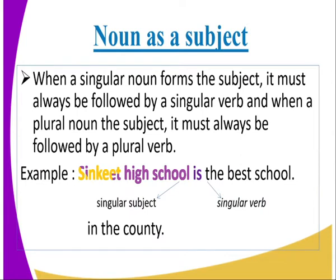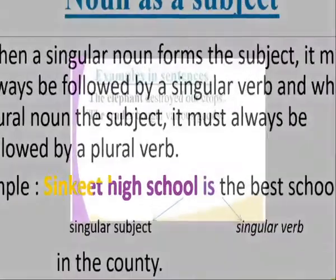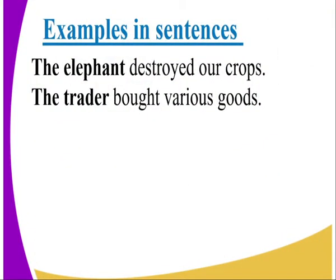When a singular noun forms a subject, it must always be followed by a singular verb. And when a plural noun is a subject, it must always be followed by a plural verb. Example: Sinket High School is the best high school — Sinket High School acts as a singular subject and 'is' is the singular verb. Further examples: The elephant destroyed our crops. The trader bought various goods.